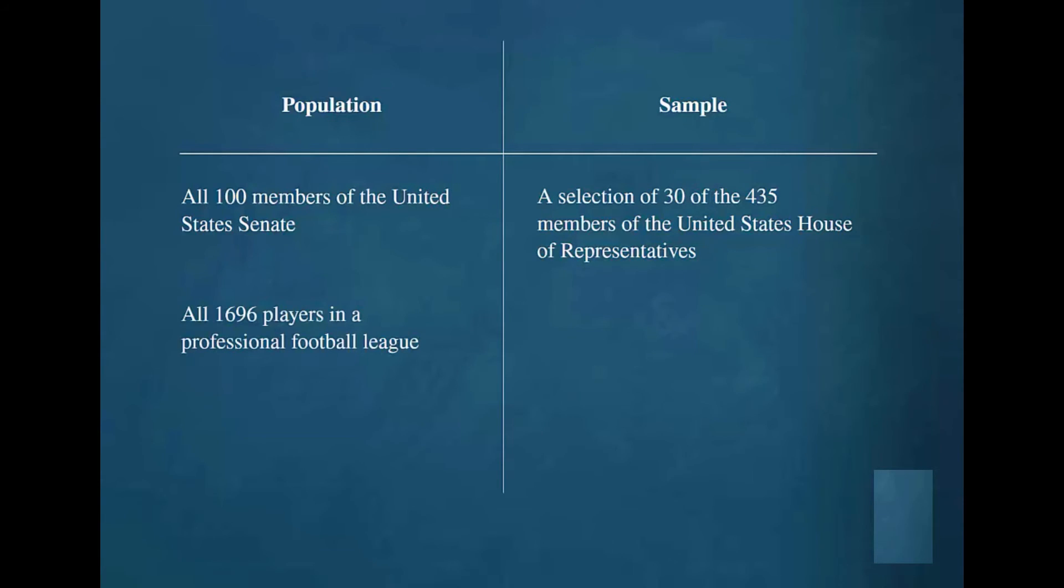All 1,696 players in a professional football league would be classified as a population. A selection of 2,000 of the estimated 1.1 million high school football players represents only a subset of the entire population and would therefore be classified as a sample.